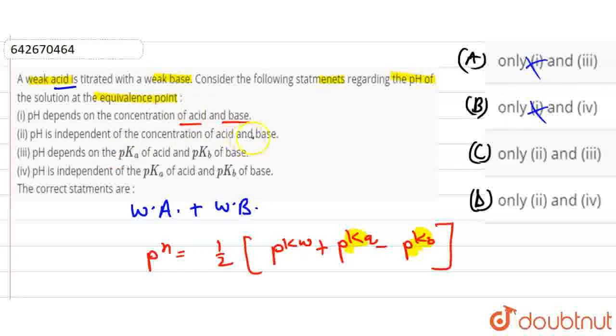Second statement: pH is independent of the concentration of acids and base. This is correct because there are no concentration terms here. Only PK and PK values are here. So my second statement will be correct.